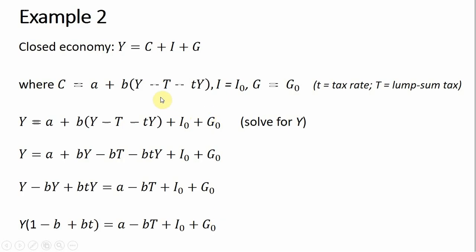Example two is a slightly more complicated example with a slightly more complicated tax system. Our tax system will comprise of lump sum taxes, capital T, and also a proportional tax where your tax is based on a proportion of your income. The little t here is a tax rate, like one-fourth or one-third, for example. As before, we'll substitute everything into our closed economy GDP equation.